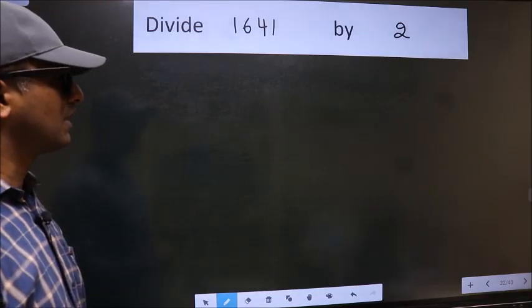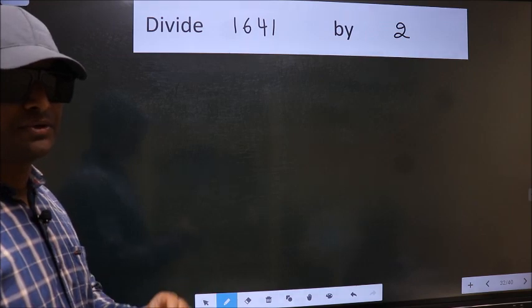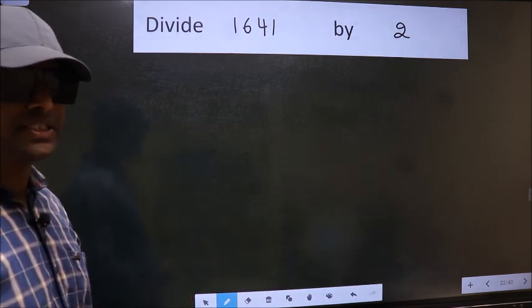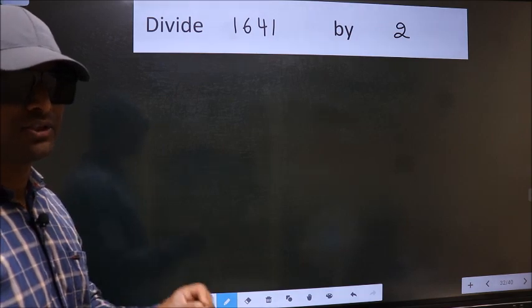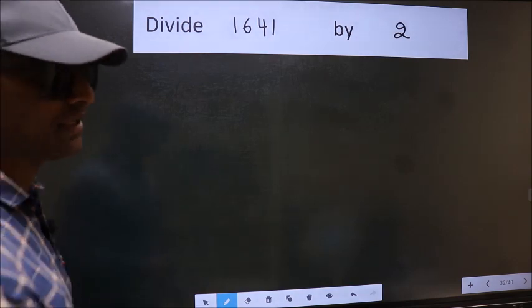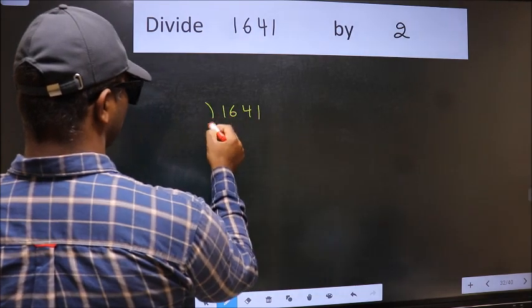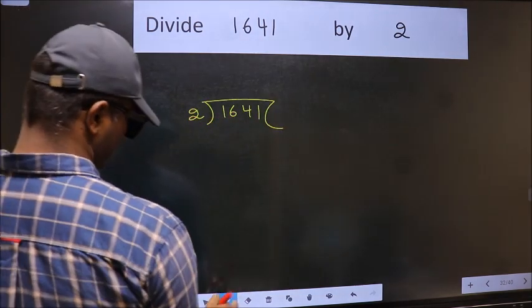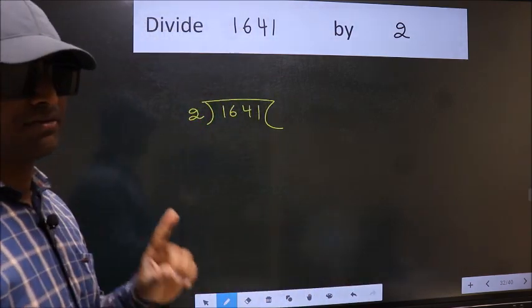Divide 1641 by 2. While doing this division, many do this mistake. What is the mistake that they do? I will let you know. But before that, we should frame it in this way. 1641 here and 2 here. This is your step 1.